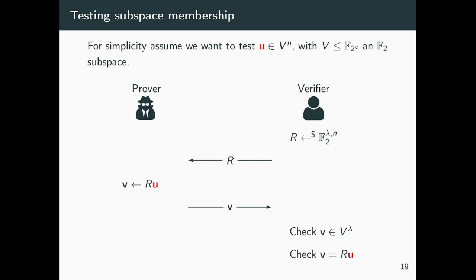Even though this test would have small soundness, so we need to repeat it several times. The verifier chooses λ random linear combinations and sends them to the prover in the form of a matrix R. The prover applies the linear map to the vector u, obtaining v, whose entries supposedly belong to the vector space V. The verifier can check that the entries of v belong correctly to the vector space, and applying a standard Lincheck that we already have, can check that v is indeed computed correctly.